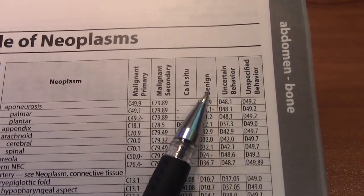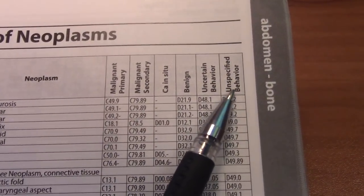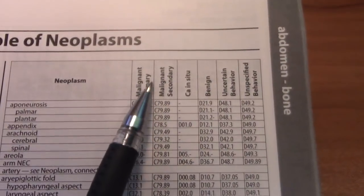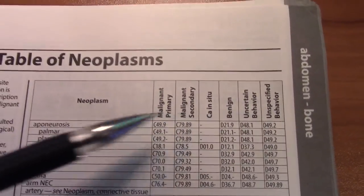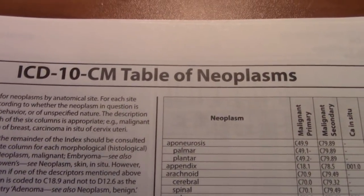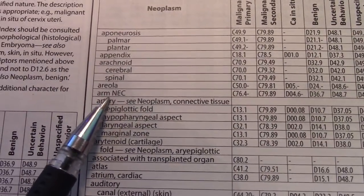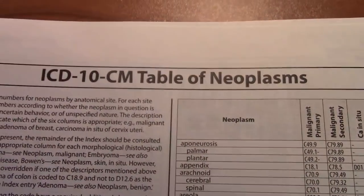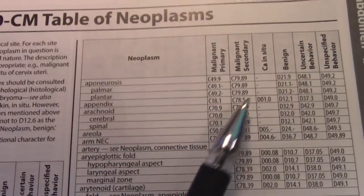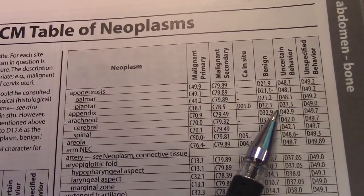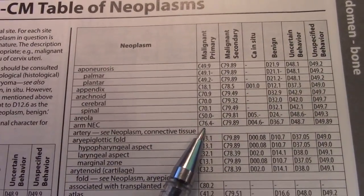Benign is not the bad cancer — it's a new growth that hasn't given bad behavior yet. Then there's new growth that has uncertain behavior, or unspecified, because sometimes your physician doesn't tell you. You just know it's a new growth but you're not sure whether it's malignant, benign, or in situ. Once you know what each one of these headers mean, you find the location on your ICD-10-CM table of neoplasms. For example, if your physician says it's a malignant neoplasm of the arm, you find the main term arm and identify whether that arm is the primary, secondary, in situ, benign, uncertain, or unspecified site. Based on your diagnosis, you'll know which code to use.